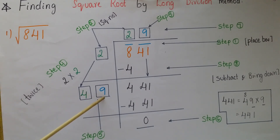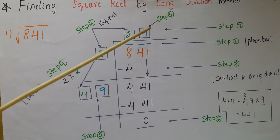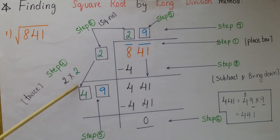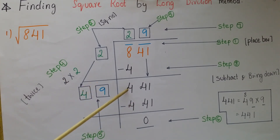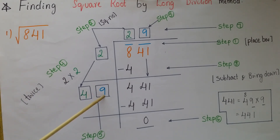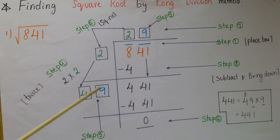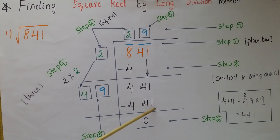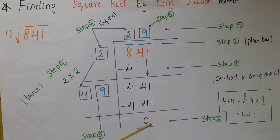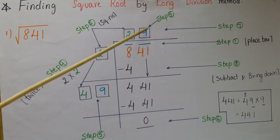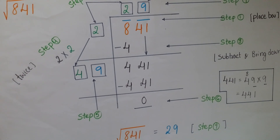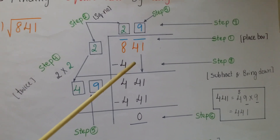Now think of a digit to place next to the 4 in the divisor and also in the quotient, such that multiplying the full divisor by that digit gives a product less than or equal to 441. Trying 9: 49 × 9 = 441. Write 441 below and subtract — the remainder is 0. The quotient 29 is the square root of 841.